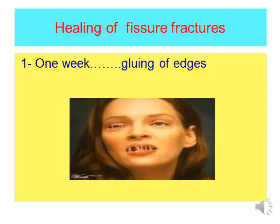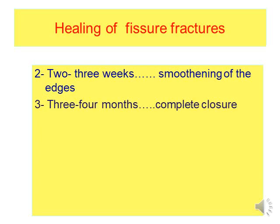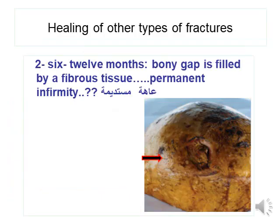Healing of fissure fracture takes two to four months. It starts from three weeks by smoothening of the bone edges. It takes up to 12 months to fill the bone gap with fibrous tissue.